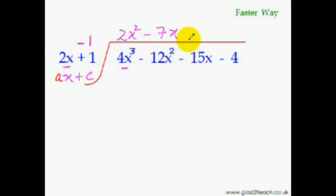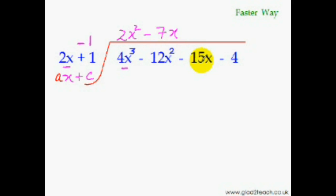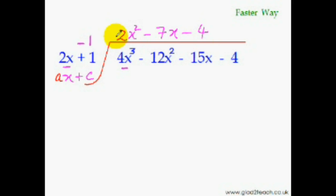Everything else remains the same as for divisors of type X plus C — the only change is that before we put down each answer term, we divide by the coefficient. To find the third term, we again multiply minus 1 with minus 7X and add it to the next term of the dividend, then divide by 2. Minus 1 times minus 7X is plus 7X. Plus 7X minus 15X gives minus 8X. Minus 8 divided by 2 is minus 4. Question solved — this is our quotient.